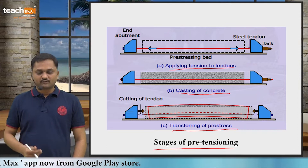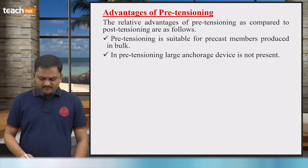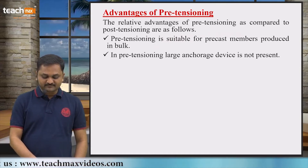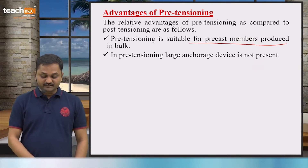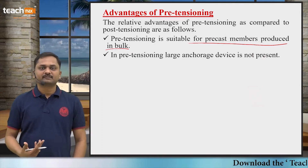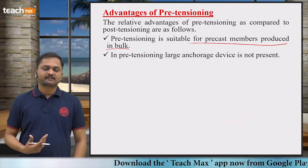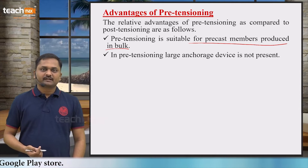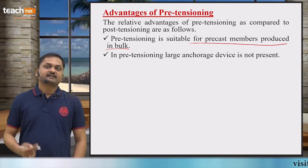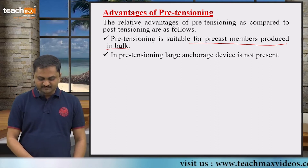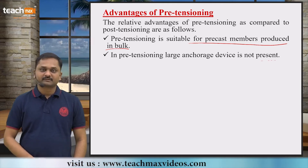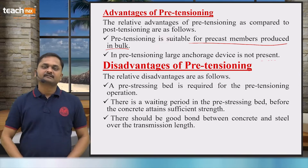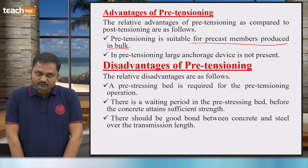The advantages of pre-tensioning over post-tensioning are as follows. Pre-tensioning is suitable for pre-cast members produced in bulk — mainly sleepers for railway tracks, electric poles, and drainage pipes. All these kinds of pre-cast members can be constructed using the pre-tensioning system. Also, large anchorage devices are not required for pre-tensioning. These are the two main advantages of pre-tensioned members.